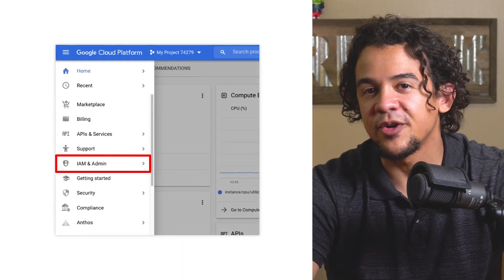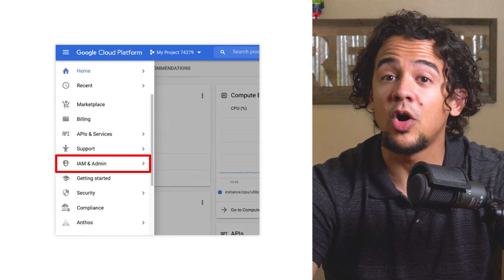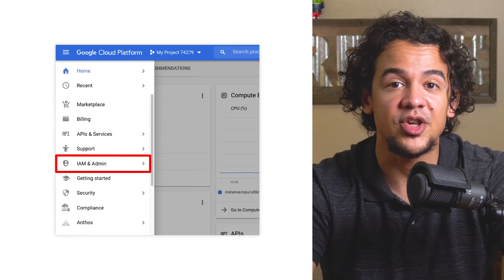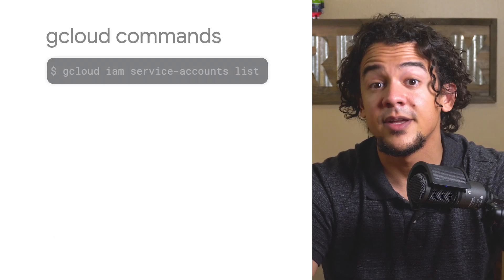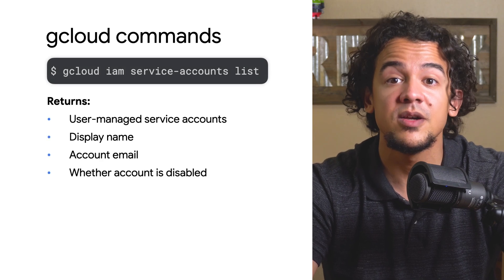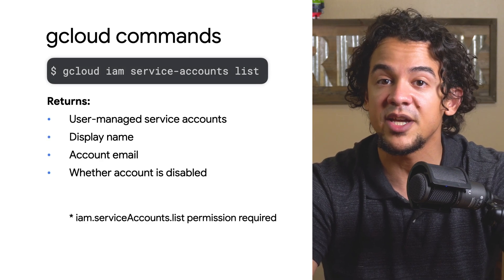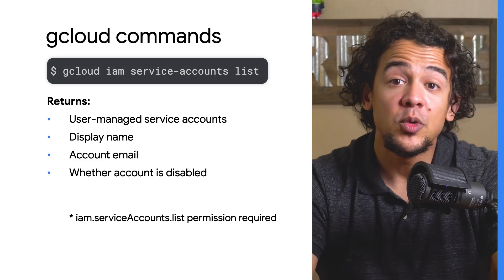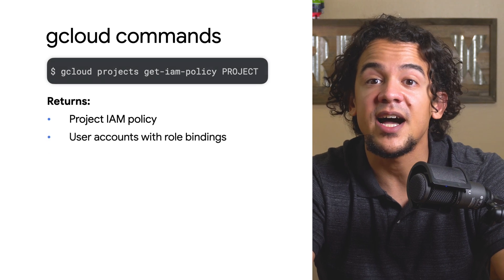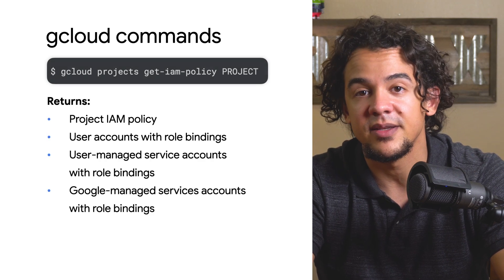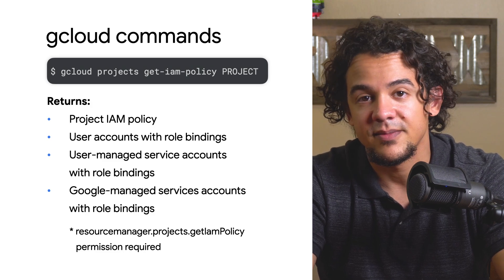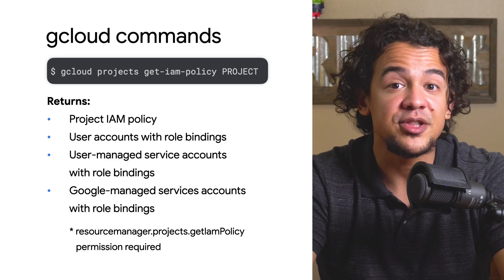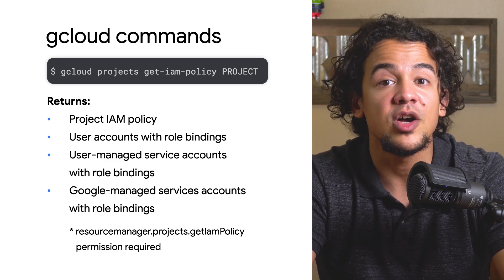So how can we see these service accounts in our Google Cloud project? If you want to see all of the user managed service accounts that currently exist on your project, you can use the Google Cloud console under IAM or through the CLI using the gcloud command. The command gcloud iam service-accounts list will nicely list your user managed service accounts, display names, emails, and whether they're disabled. If you want to see all of your service accounts including Google managed ones, the command gcloud projects get-iam-policy followed by your project ID is your best bet. This will output your project's IAM policy — the roles currently assigned to the accounts on your project — including user accounts, user managed service accounts, and Google managed service accounts, as long as they have roles assigned to them.